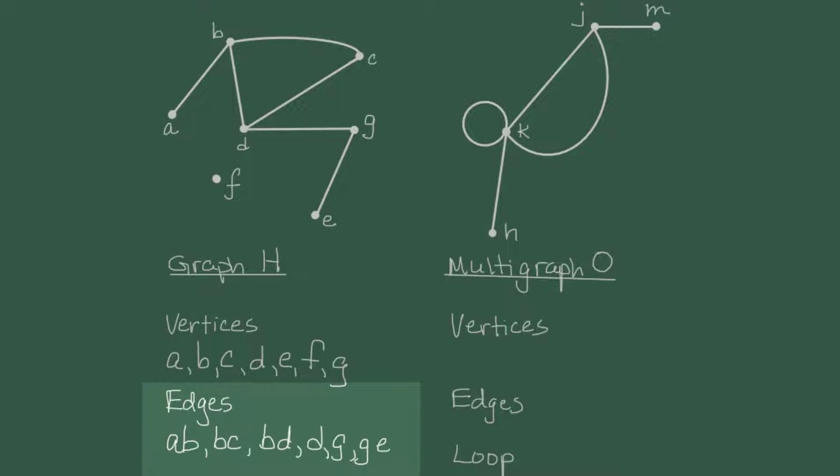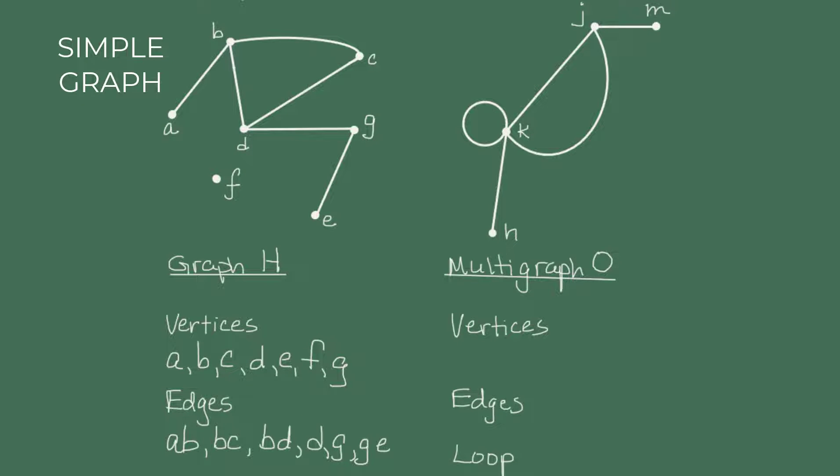Graph H is an example of a simple graph. We call it a graph for short, but if we want to be specific, we say simple graph.